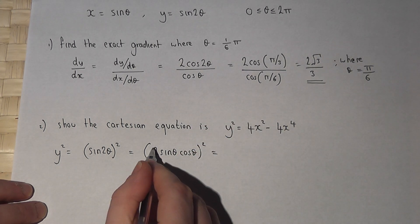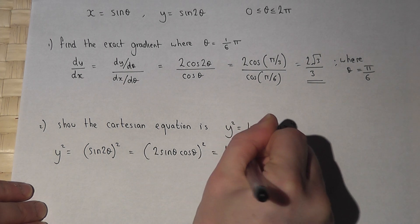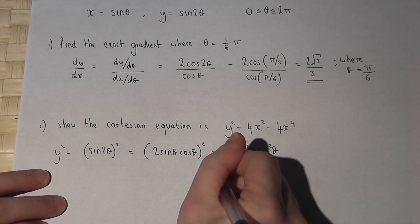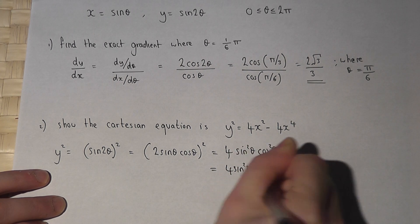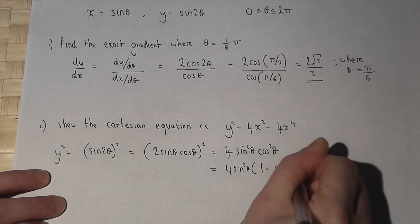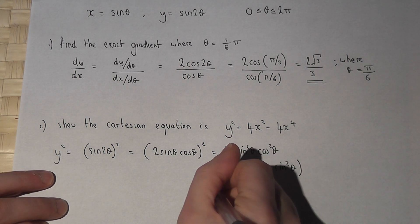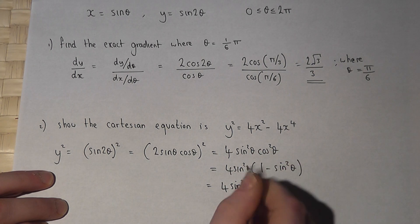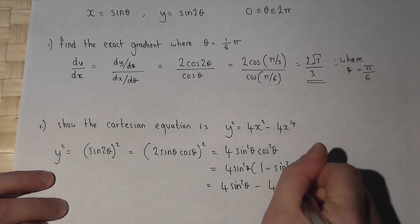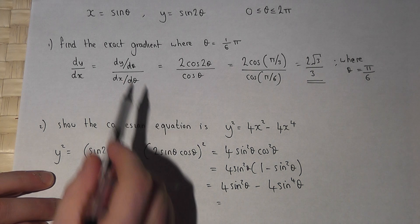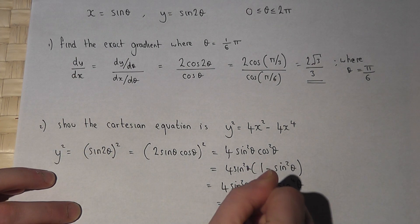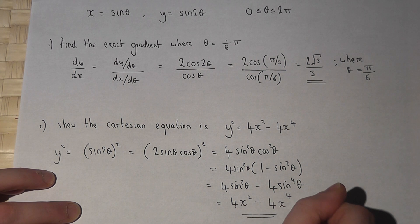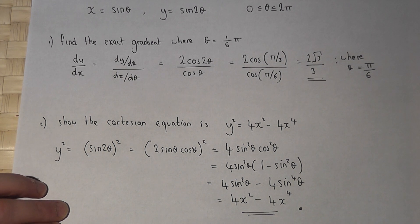If I now square each term in turn, I get 4 sine squared theta cos squared theta. However, cos squared theta is 1 minus sine squared theta. If I then expand this, I get 4 sine squared theta take away 4 sine to the power of 4 theta. But sine theta just equals x, so this equals 4x squared take away 4x to the power of 4, as required.